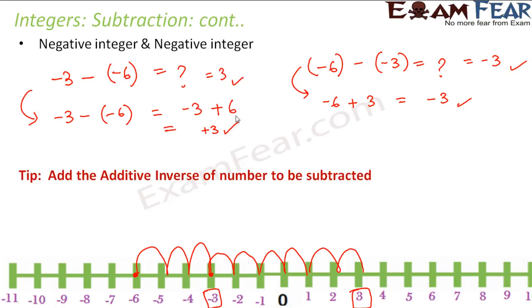So the tip again remains the same: subtracting a number is the same as adding its additive inverse. Add the additive inverse of the number to be subtracted. In this case, minus 6 was the number to be subtracted, so instead of subtracting minus 6, you add plus 6.